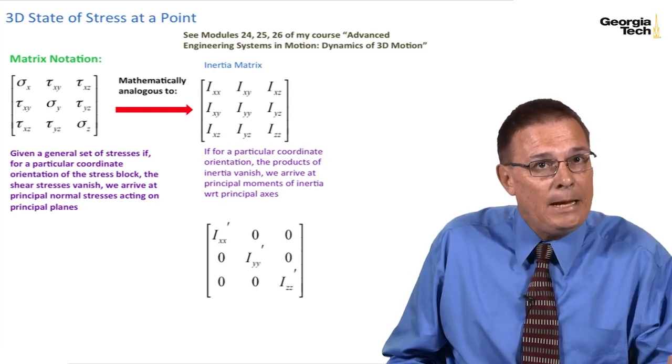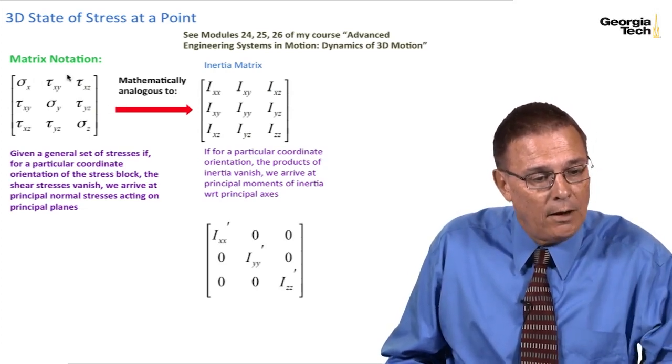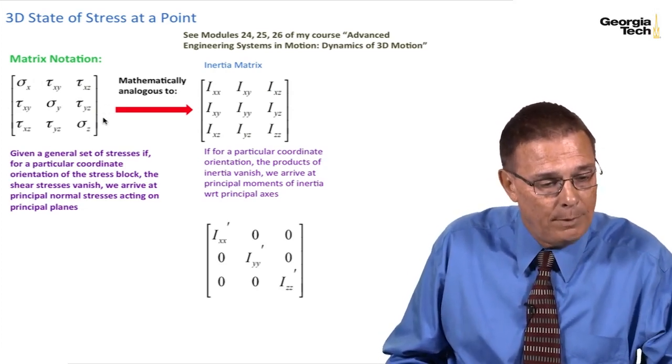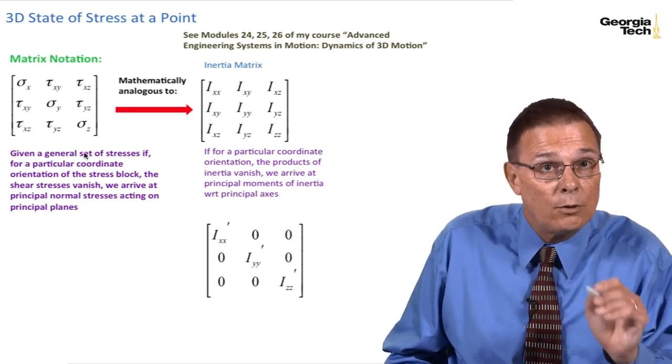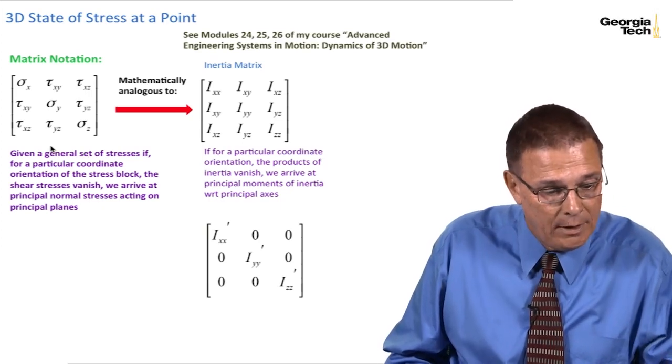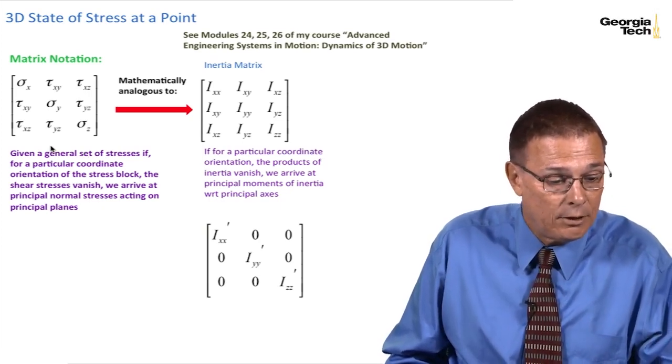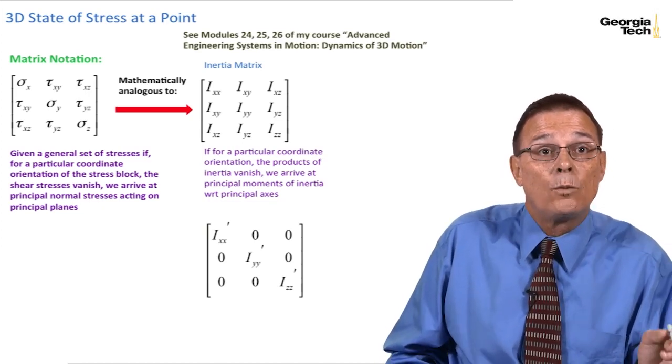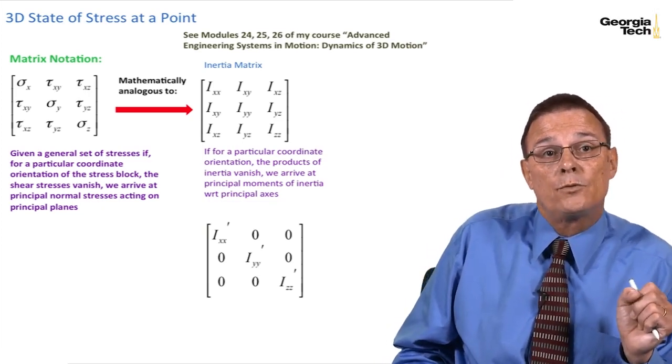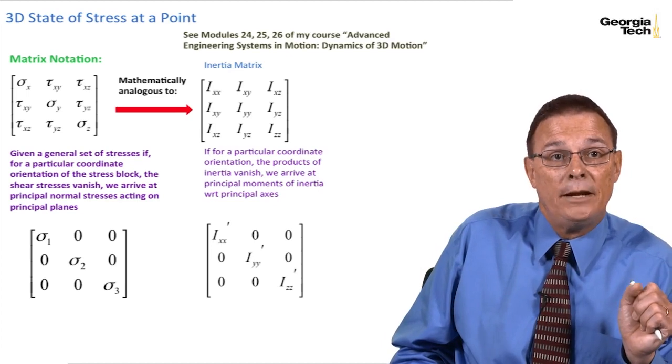Now, we can do the same thing with our tensor or our matrix array of stresses. And so for a given general set of stresses shown here, there is a particular coordinate orientation where the shear stresses vanish, and we arrive at what are the principal normal stresses acting on the principal planes.